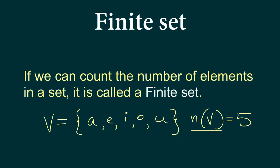One quick thing to remember is that the empty set, null set, or void set is also a finite set. If this is set A, then the number of elements in A is equal to 0. So the null set, void set, or empty set is also a finite set.